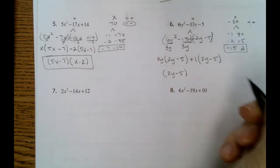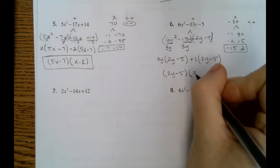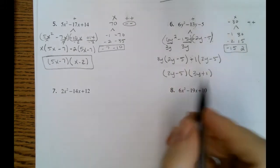So that is the first part of our answer. And then the second part of our answer will be 3y plus 1 from our GCFs.